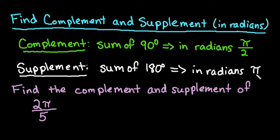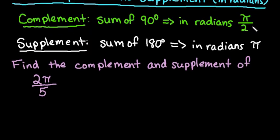So if you're asked to find the complement and the supplement of an angle such as 2π over 5, what you are going to do is basically you're going to subtract the angle that you're given.